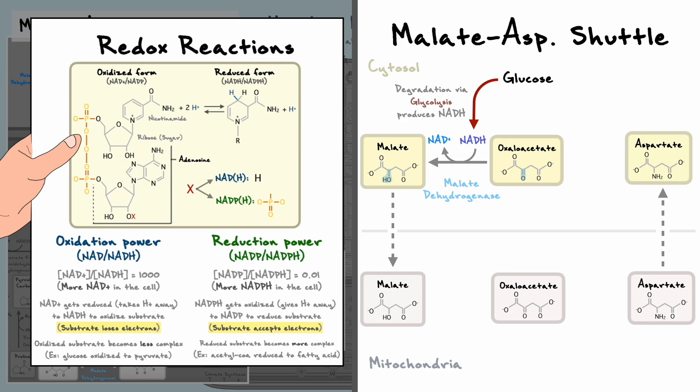In the example that we have here, you can see that oxaloacetate has a double bond to an oxygen. NADH, which holds an extra hydrogen, can donate it to oxaloacetate to form malate which now has an OH group. In this reaction, oxaloacetate gets reduced to malate since it now accepts electrons, and NADH gets oxidized to NAD+, since it loses these electrons.